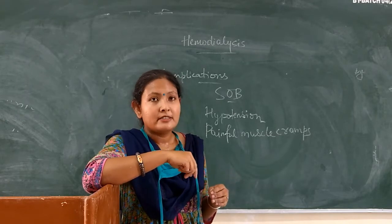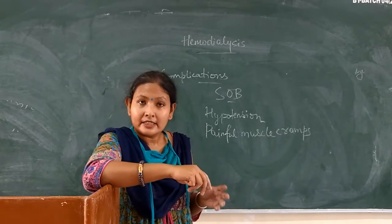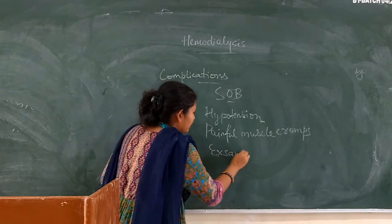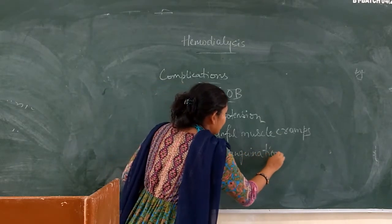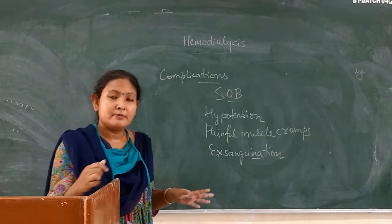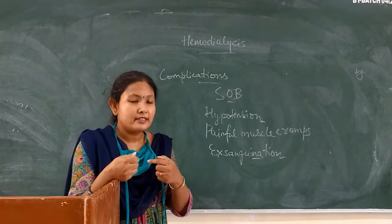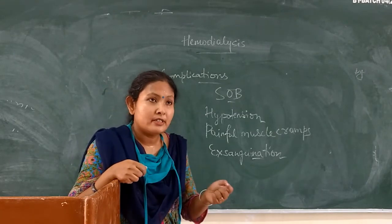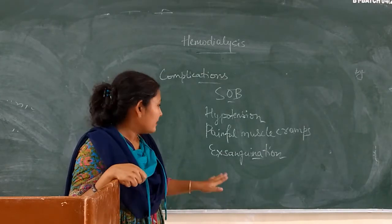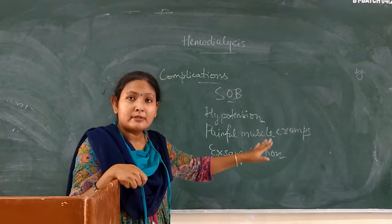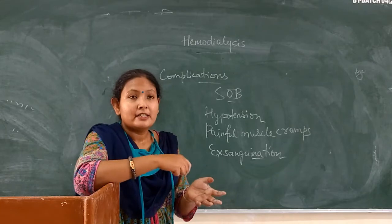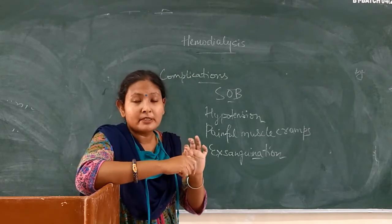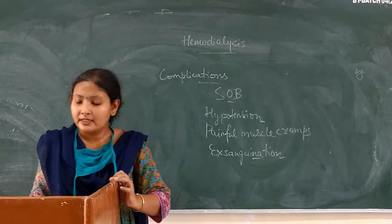During dialysis the patient can experience pain from muscle cramps. One of the important complications is needle dislodgement. At the time of therapy, if the needle is dislodged, the patient can immediately collapse — this is called exsanguination, meaning severe blood loss occurs from that site and the person collapses. Therefore, close monitoring of the patient during dialysis is very much required to watch for needle dislodgement.